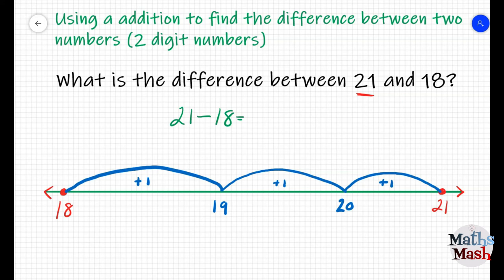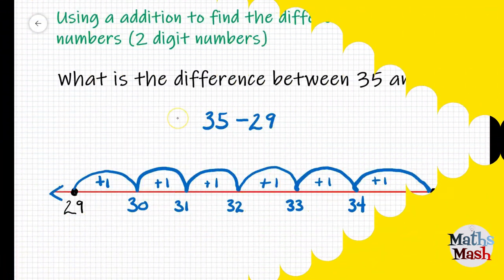You can see that I went up in hops of one each time, writing the size of the hop and the number I have landed on. I can add up all of the hops of one, and I found that I had three hops. So, the answer to the number sentence, 21 subtract 18, will be three. So, the difference between 21 and 18 is three.